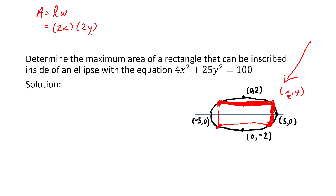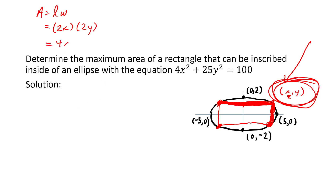You might ask how we know x and y are positive, since lengths must be positive. It goes back to what we said: we chose x and y specifically to be the point in the first quadrant, so both are positive. Therefore, the area of the rectangle equals 2x times 2y, which is 4xy.